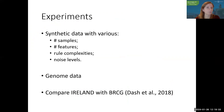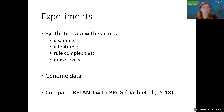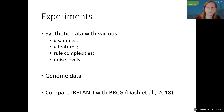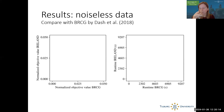We conducted experiments with a bunch of data sets. First, synthetic data where we control the number of samples, number of features, we make data that fits exactly a bunch of DNF rules, vary rule complexities, noise levels, etc. There's also a genome data set IRELAND was tested on. It was compared with BRCG — Boolean Rule Column Generation by Sanjeev Dash — because that is the model that works best so far.